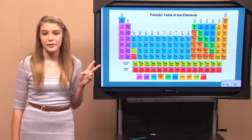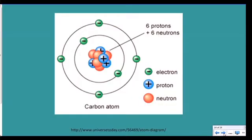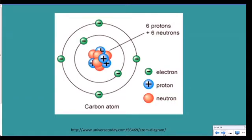Carbon is in the second period, so that means it has two energy levels for its six electrons. And since gold is in period six, it has six energy levels for all its electrons.